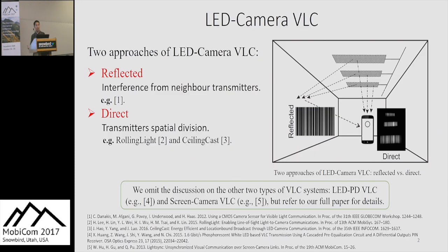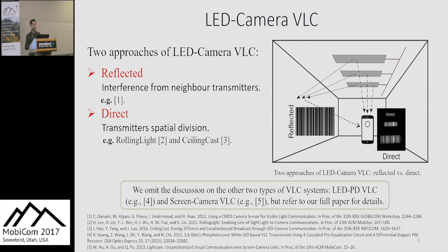Before I introduce the reflex code, I will explain why we designed it and briefly cover the background of the AOD camera. The right figure shows the typical system configuration for an AOD camera VLC system. We have the AOD transmitter on the ceiling, and the user holding a smartphone may shoot the AOD transmitter directly — this is a direct AOD camera. The user can also shoot the wall, which works as a reflector, so we can also receive the message — this is a reflect AOD camera communication system. The first academic research on AOD camera actually used reflected light for communication, so it's the reflect AOD camera.